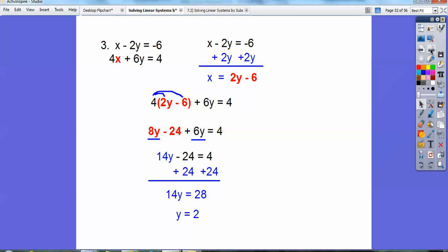Don't forget, it's an ordered pair answer, so we're going to substitute in y equals 2 back into where we had x equals. Okay, so plug in y equals 2 right there. So 2 times 2 is going to be 4. 4 minus 6 is going to be negative 2.